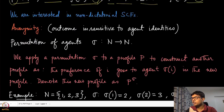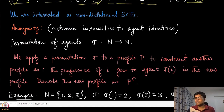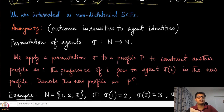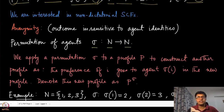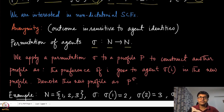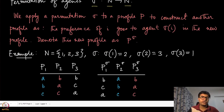Now we are interested in designing non-dictatorial social choice functions. We define one additional property: anonymity. Anonymity says that the outcome is insensitive to agent identities. It is not looking at agent identities, only at their preferences and making decisions based on those. We define a permutation sigma which renames the agents — for example, agent one is now called agent three, agent two is called agent one, and so on.